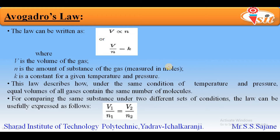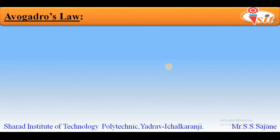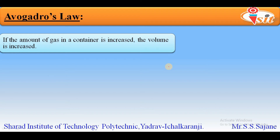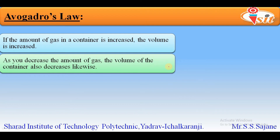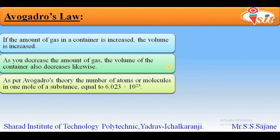In the next slide we see how many atoms or molecules are present in one mole of a substance. As established so far, if the amount of gas in a container is increased then the volume also increases, and if the amount decreases, the number of molecules and the volume decrease together. As per Avogadro's theory, the number of atoms or molecules in one mole of a substance is equal to 6.023 × 10²³.